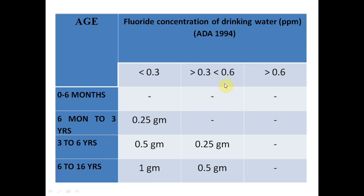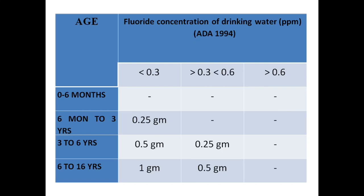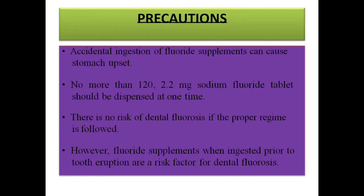For children aged six months to three years drinking water with less than 0.3 ppm, give 0.25 mg supplement; three to six years give 0.5 mg; six to sixteen years give 1 mg. If the water supply has between 0.3 and 0.6 ppm, no supplement is needed up to three years; three to six years give 0.25 mg; and six to sixteen years give 0.5 mg. If drinking water has more than 0.6 ppm, no fluoride supplementation is needed. These tablets, lozenges, and drops give a reduction of 16 to 65 percent because they have both systemic and topical effects, though precautions regarding toxicity must be taken.